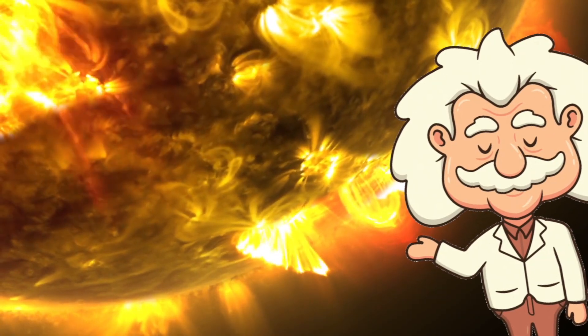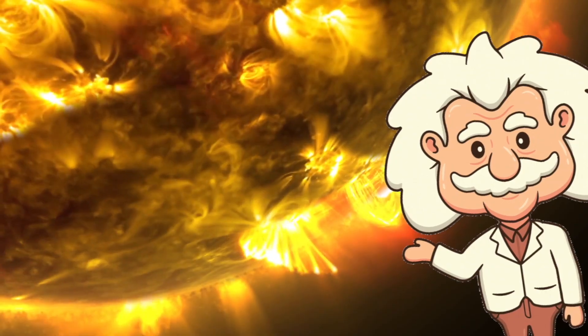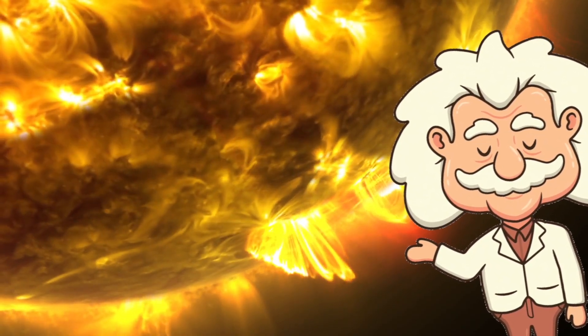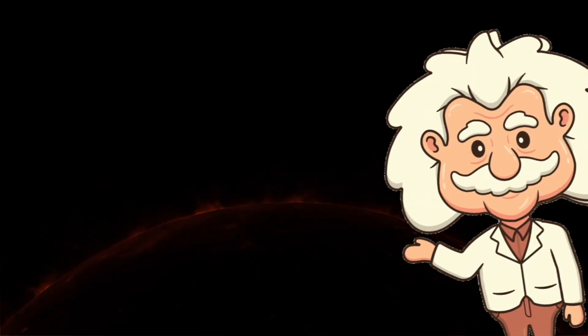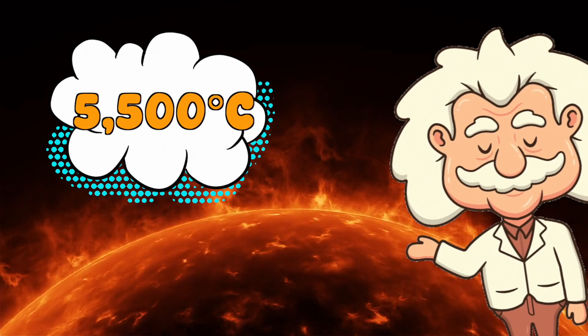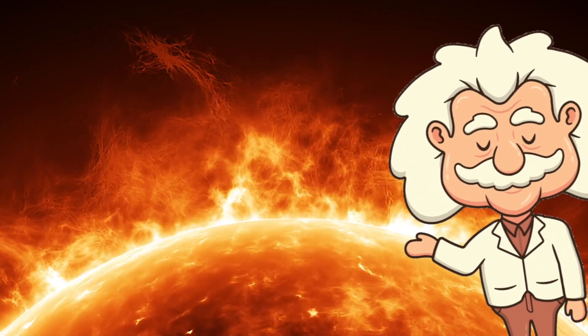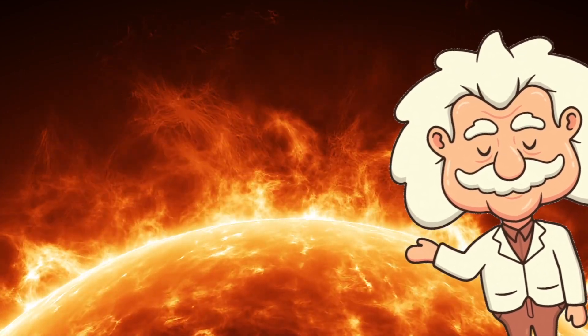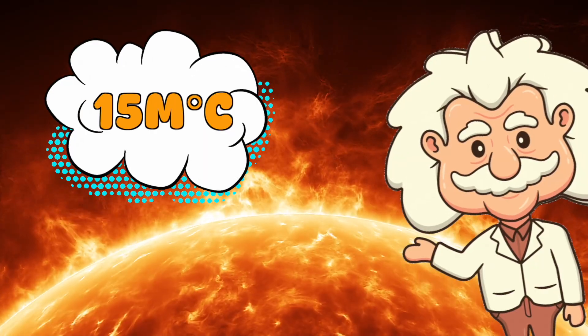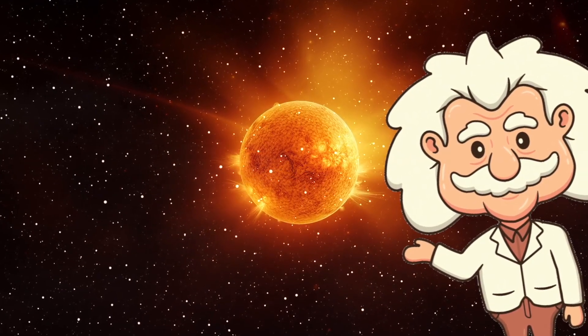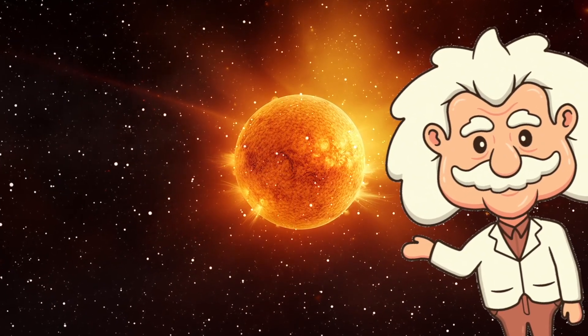First, let's get something straight. The sun is ridiculously hot. Like, don't even think about it hot. Its surface temperature is around 5,500 degrees Celsius. And the core? Oh, just a casual 15 million degrees Celsius. That's like the entire concept of summer, cranked up to the max, and then set on fire.